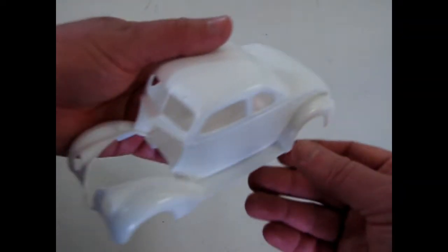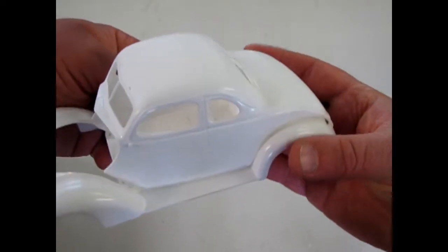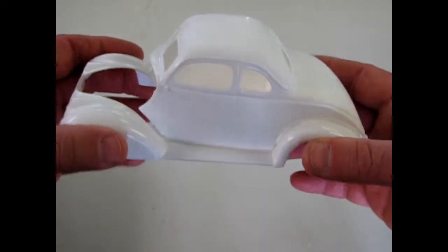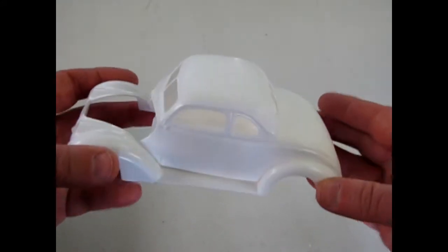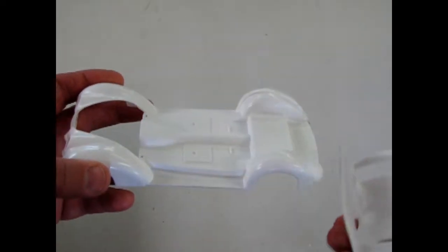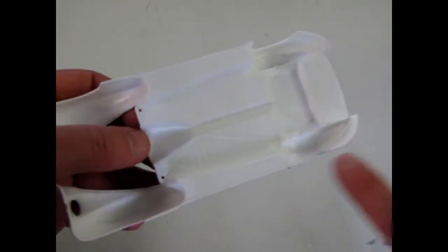Then we have our wonderful body and fenders. 1937 was quite a nice year for streamlining. See our body fits really well on there. There are actually two separate parts. And this has some really nice detail underneath.